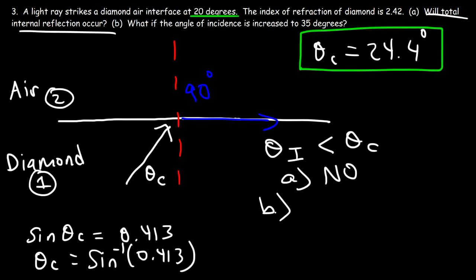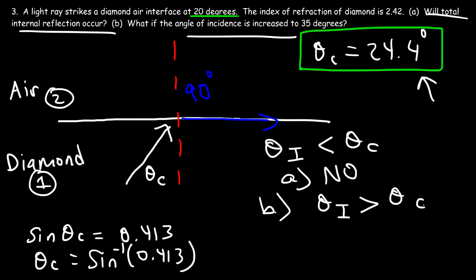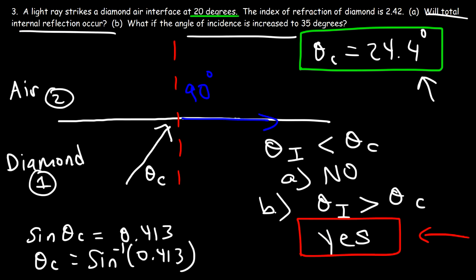For part b, what if the angle of incidence is increased to 35 degrees? Since 35 is greater than 24.4, and the incident angle exceeds the critical angle, the answer is yes — total internal reflection will occur. That is the answer for part b.